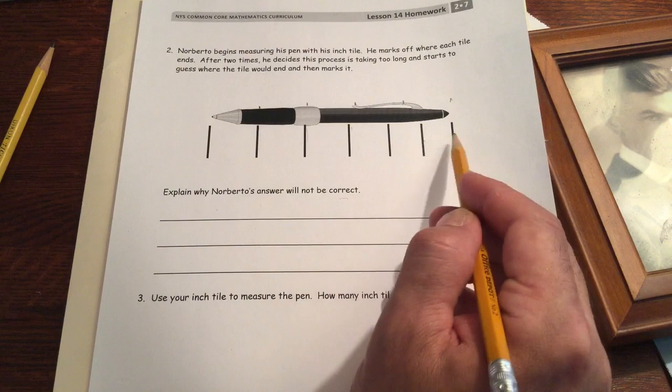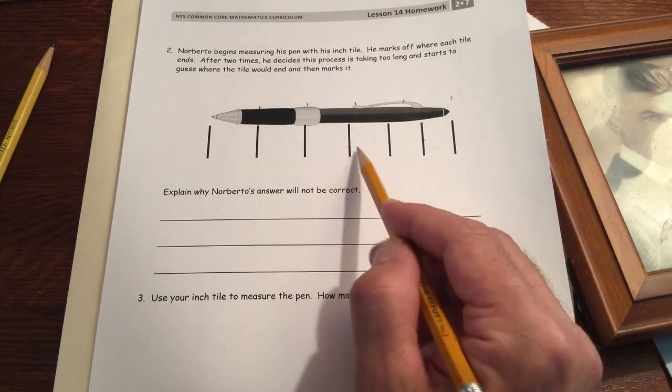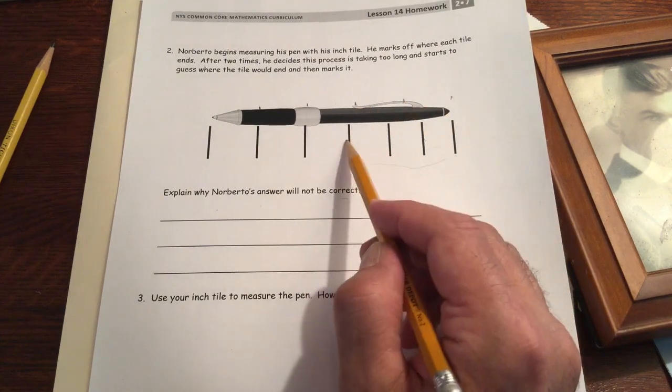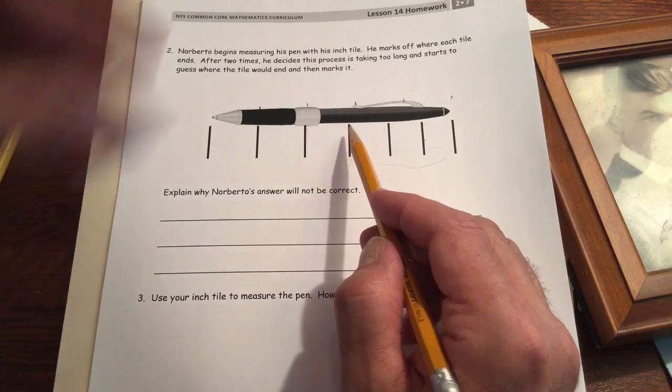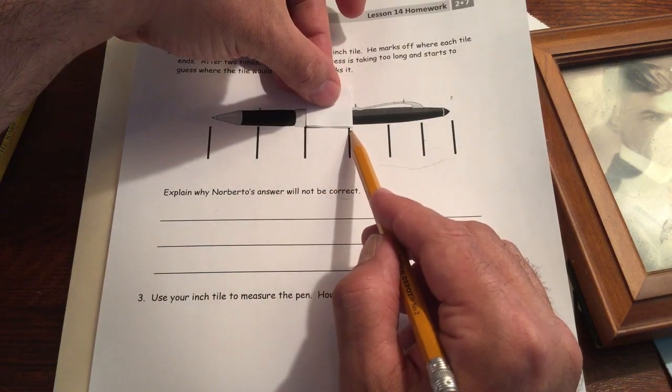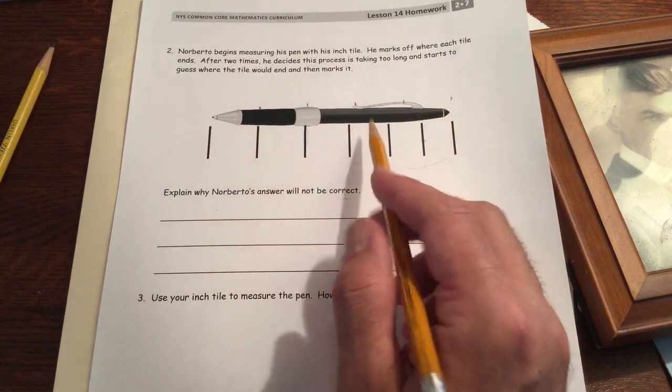These marks are too close together. He marked somehow out of these three, he should have only had two. And this one even is a little bit less than, this one even is a little bit less than a whole inch. So he might be, he was guessing on that one too.